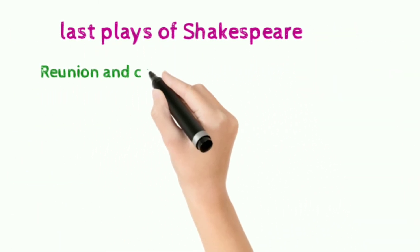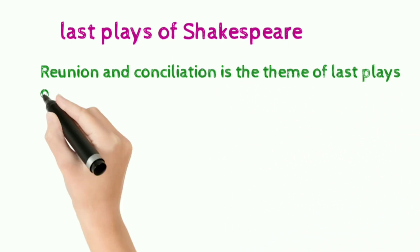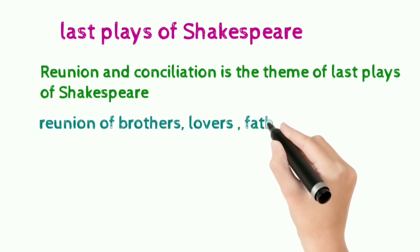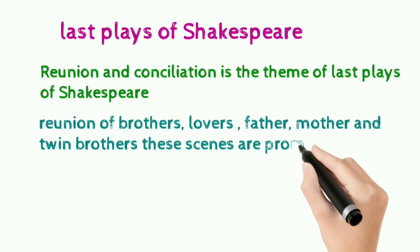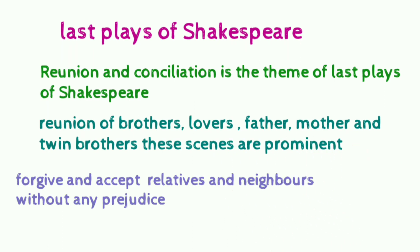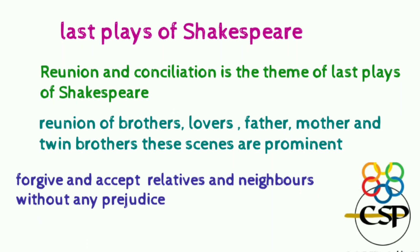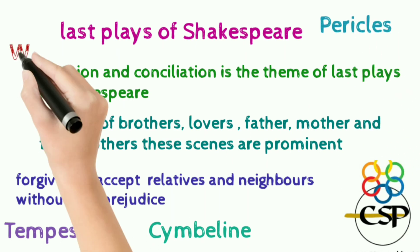The last plays of Shakespeare have catharsis, reunion, and reconciliation as their themes — reunion of brothers, lovers, fathers, mothers, and twin brothers. Characters forgive and accept relatives and neighbors without any prejudice and forgive each other's mistakes. The famous last plays are Cymbeline, Pericles, The Winter's Tale, and The Tempest.